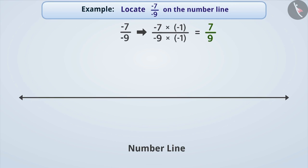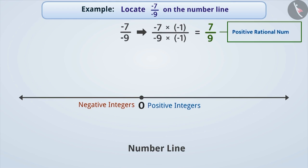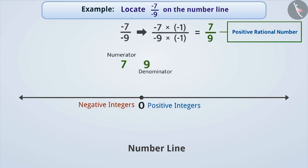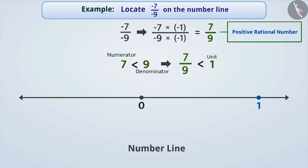To express 7 by 9 on the number line, we draw a line and mark a point as 0. Positive integers are marked on the right side of 0 and negative integers on the left side. Since 7 by 9 is a positive rational number, its position will be to the right of 0. The numerator is smaller than the denominator, so 7 by 9 is less than 1, meaning its position will be between 0 and 1. We divide the distance from 0 to 1 into 9 equal parts, and since the numerator is 7, we move 7 steps to the right of 0.